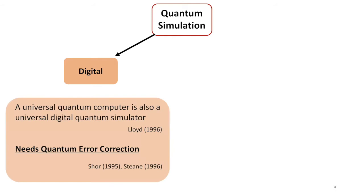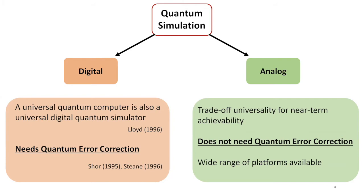There are two ways to do quantum simulation. The first is the digital approach, where one uses a universal quantum computer to simulate the system. The price of this universality is quantum error correction. There is a lot of effort today to realize such a universal computing machine, but we are still some distance away. A more near-term goal is analog quantum simulation, where you tailor a specific quantum system to simulate another. The trade-off is universality for near-term achievability, since this approach does not need quantum error correction. There is a wide range of platforms available right now.